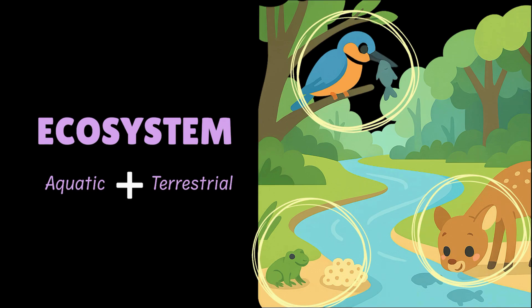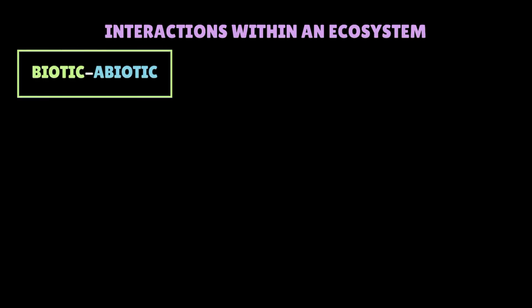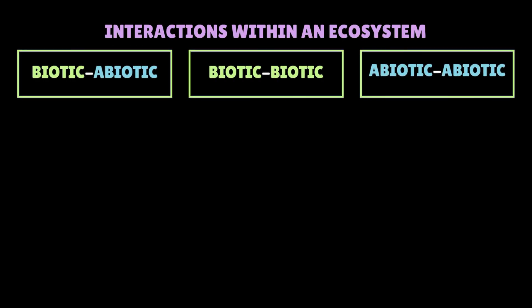Now, the interactions within an ecosystem can be sorted into three major boxes: biotic-abiotic interactions, biotic-biotic interactions, and abiotic-abiotic interactions. Let's start by looking at some examples of biotic-abiotic interactions.